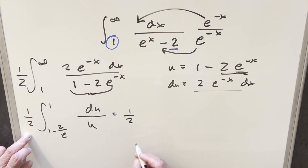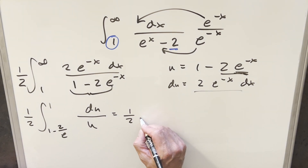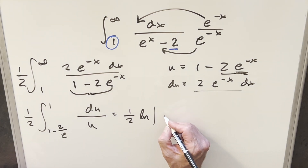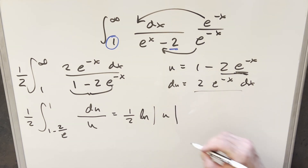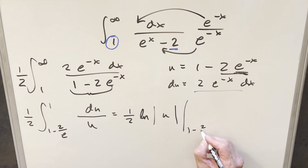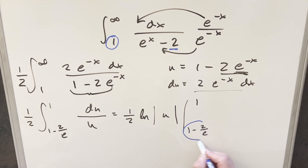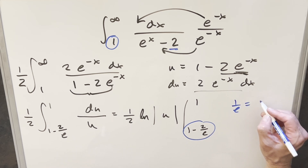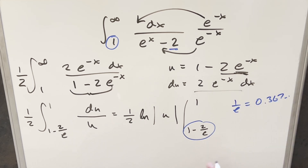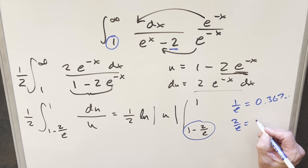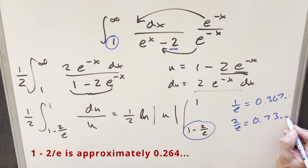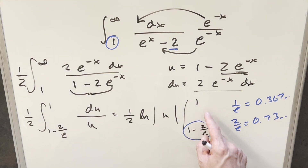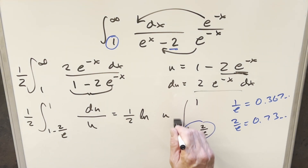Going ahead and integrating, we have the 1 half out front, and this becomes natural log of the absolute value of u, evaluated from 1 minus 2 over e to 1. We can drop the absolute value here because 1 over e is about 0.367, so 2 over e is about 0.73, meaning we're going from about 0.73 to 1 — it's always positive.